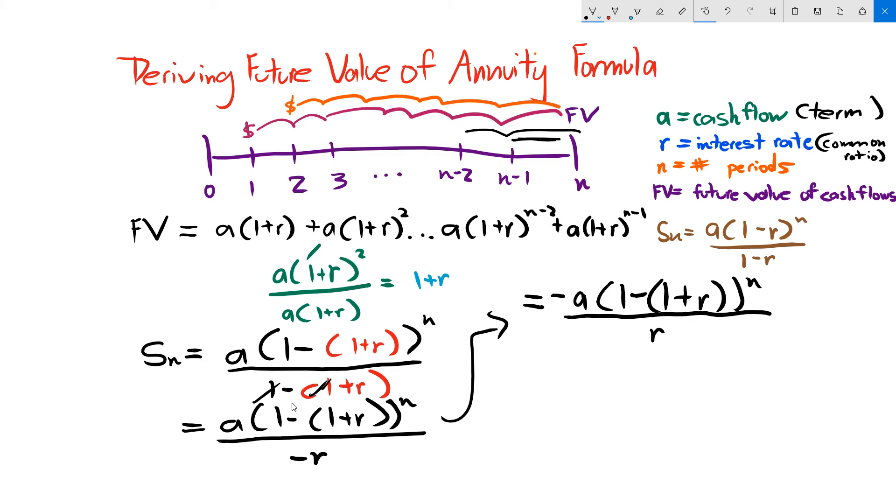1 minus (1+r) to the n over r, and now we need to distribute the negative inside this bracket, so we have a to the negative 1, let's just put the negative 1 over here, to the negative 1. And then this is going to be made to a positive, so we have 1 plus r to the n, divided by r, okay, so this is the formula we end up with, which is our future value formula.